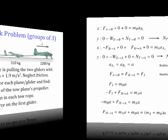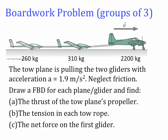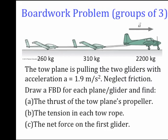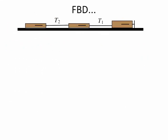Let's look at the boardwork problem from last time with the two gliders and the airplane. You're given an acceleration and asked to find the thrust of the tow plane's propeller, the tension in each tow rope, and the net force on the first glider. We identify the tension in the first tow rope as T1 and the tension in the second tow rope as T2.